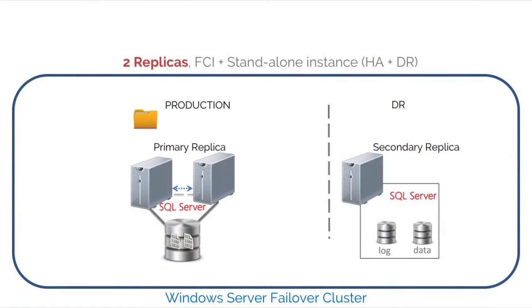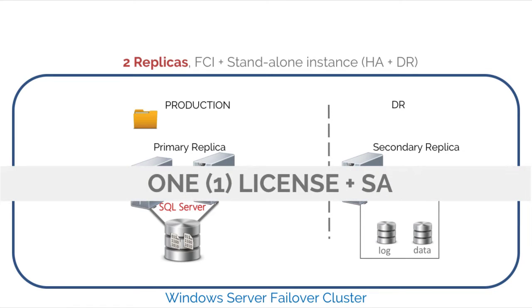This next pattern is no different from the previous one in terms of having three operating system environments. It just so happens that the first replica is on an FCI while the other is a standalone instance. You're still covered for high availability plus disaster recovery for the secondary replica. Looking at the licensing guide for this pattern, you still only need one license plus SA.